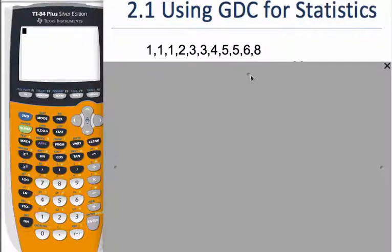Hi there, it's Mr. Rops and Mrs. Flynn, and today we're going to use our GDC for statistics. We're going to take this set of data.